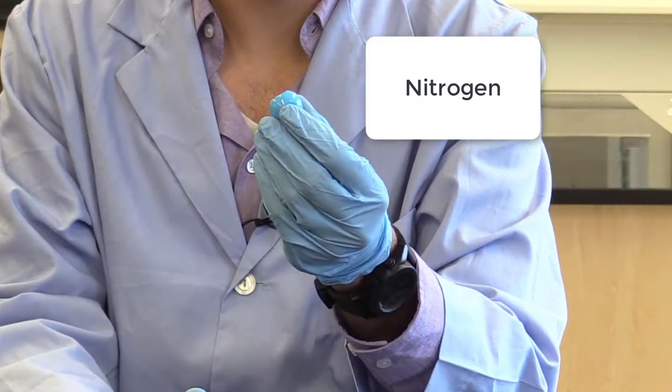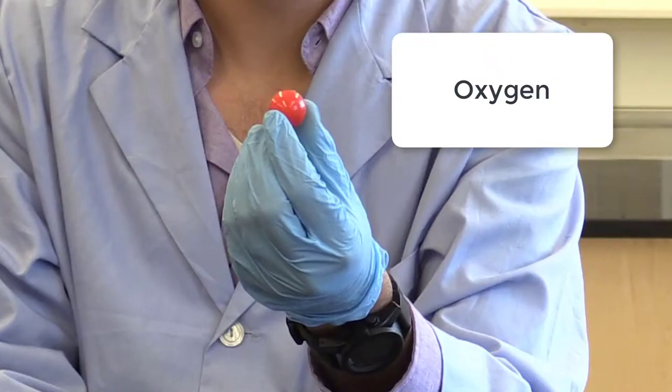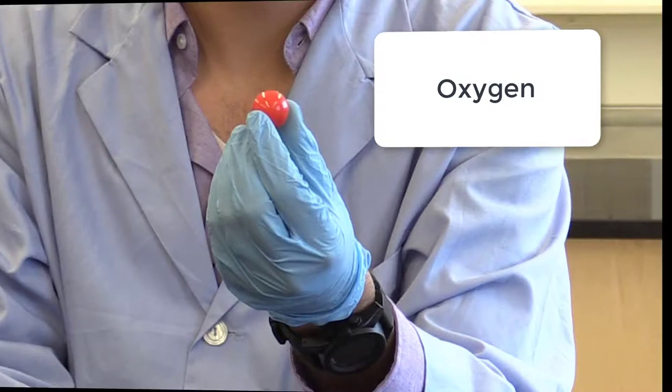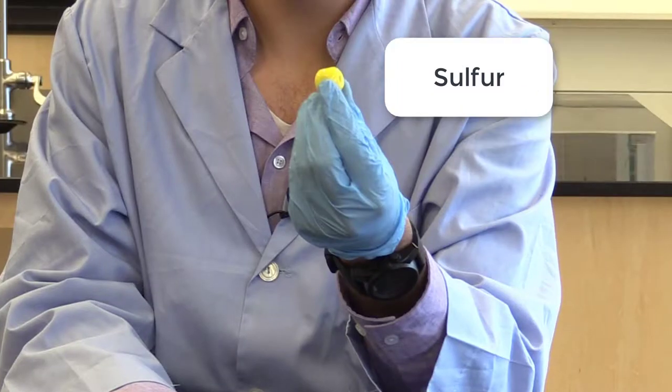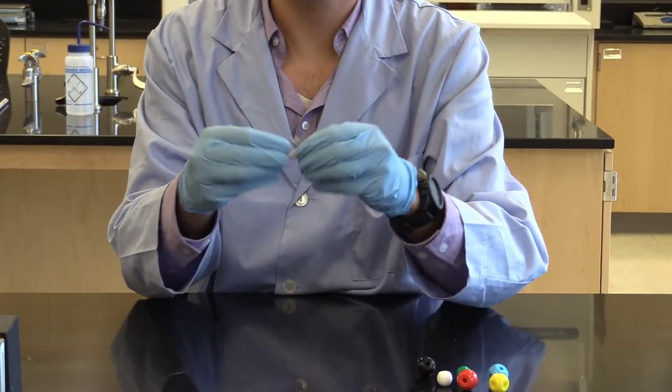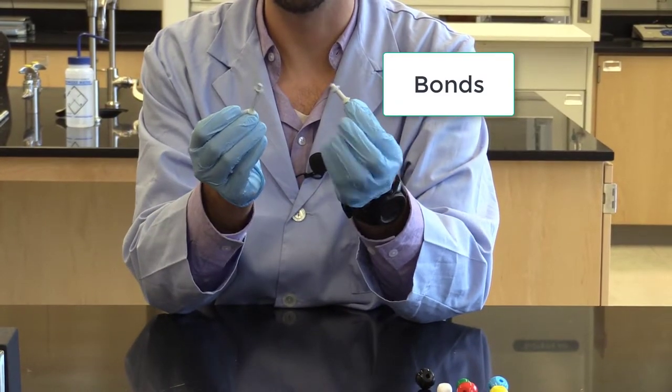This is nitrogen. This is oxygen. This is sulfur. And then these little guys here are used to make the bonds.